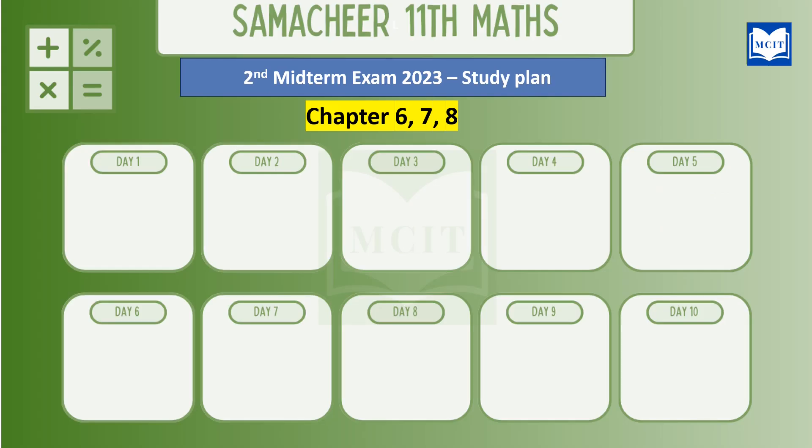So if you are starting today, you will start with chapter 7 — that is exercise 7.1 with examples. If you are looking at the exam, there is a doubt. So if you are looking at the exam problem, you will see the exam problem in the same pattern.